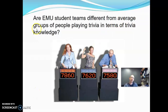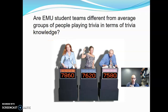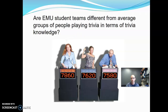Research question: Are EMU student teams different from average groups of people playing trivia in terms of trivia knowledge? The null hypothesis is that they aren't different — whatever the average trivia score is, EMU teams would also have that same average. The alternative here is two-tailed because of the words 'different from' — the question doesn't specify a direction, so this is a two-tailed alternative.